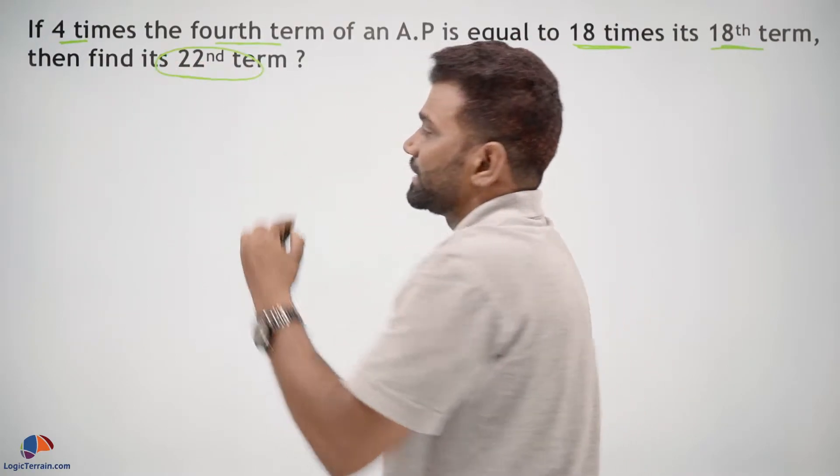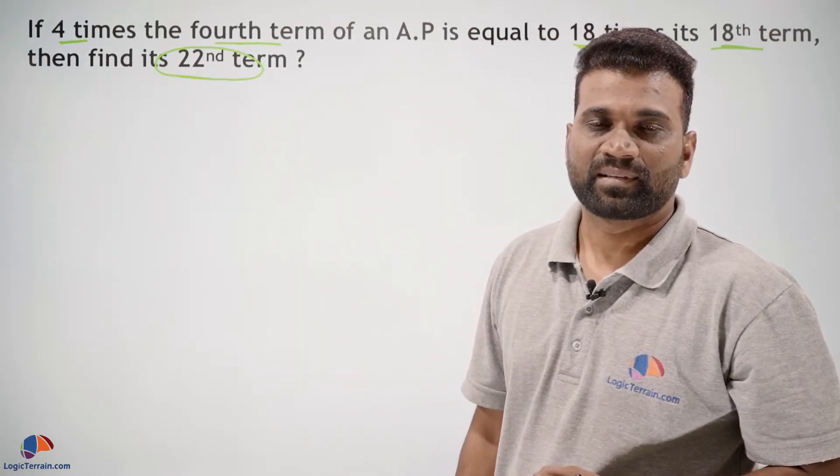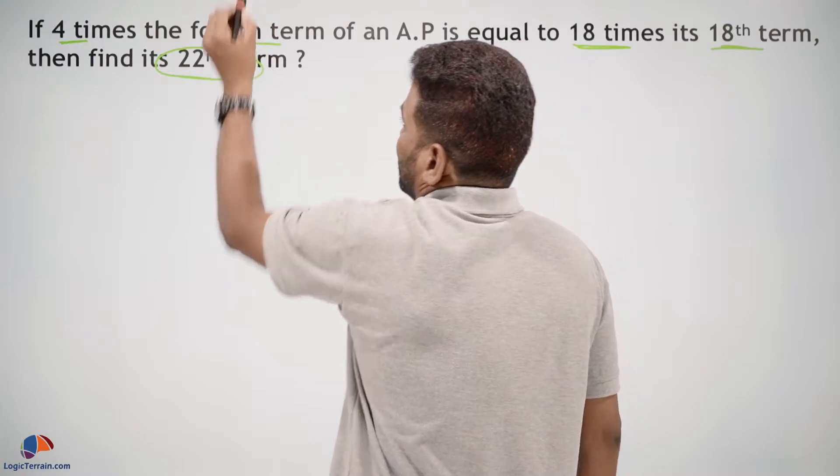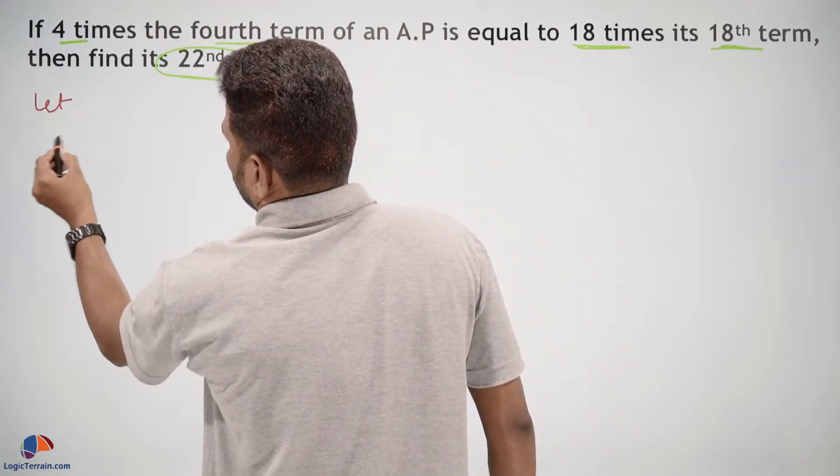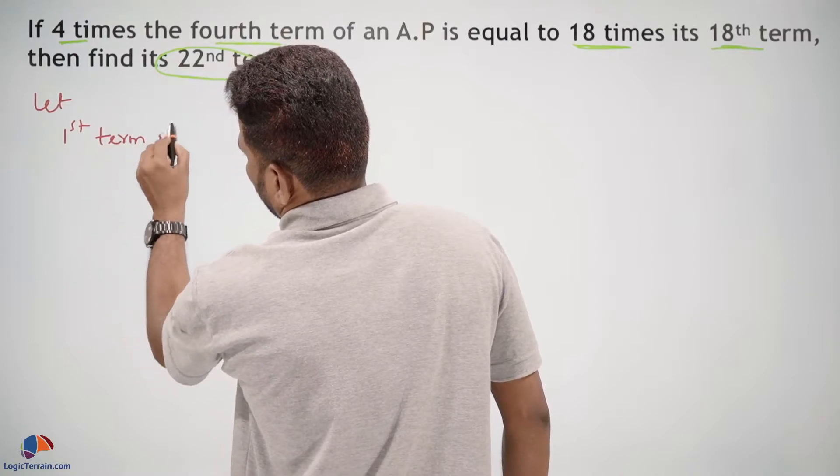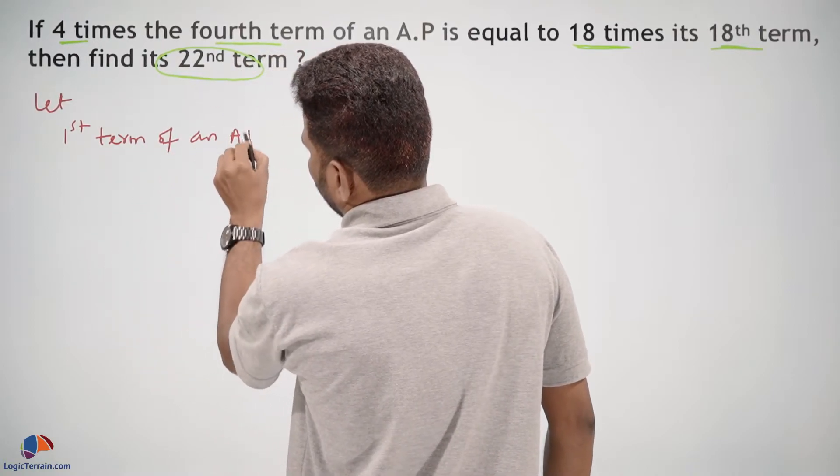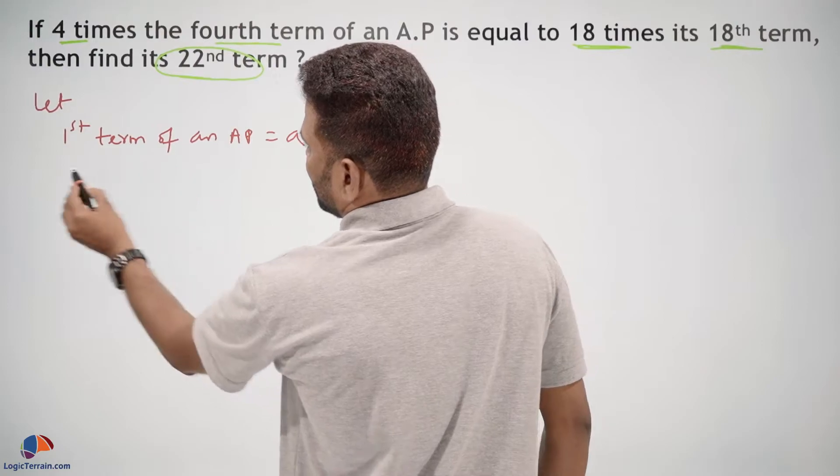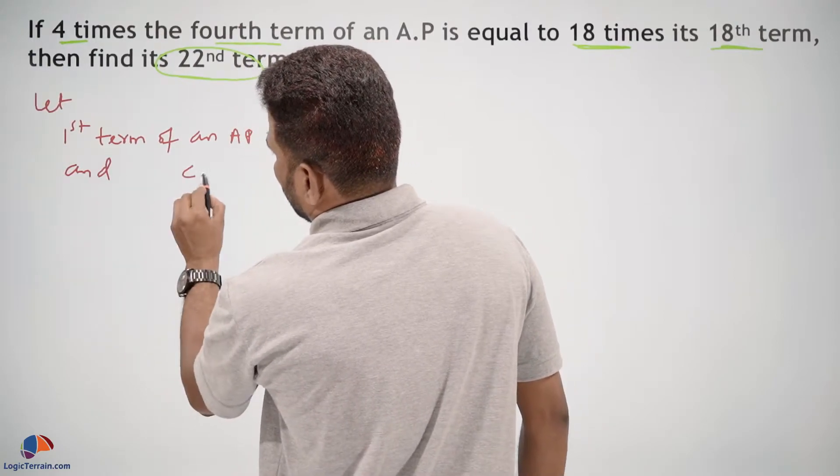For that, let the first term of an AP equal A and common difference CD equal D.